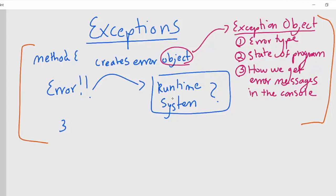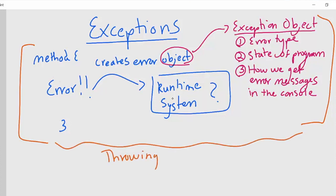Some more vocabulary: this whole event of creating an exception object and handing it to the runtime system when an error occurs is called throwing an exception. So when something goes wrong in your program and you're accessing something that isn't really there, your program is going to throw an exception. This is the big picture.